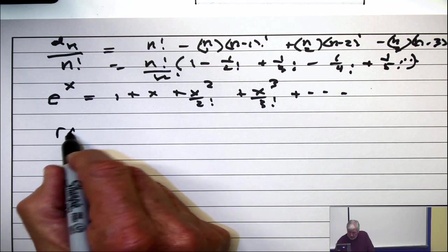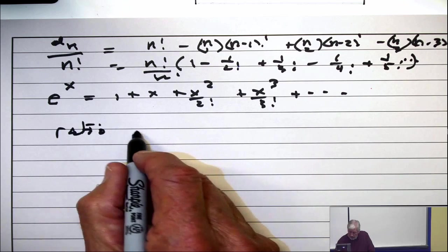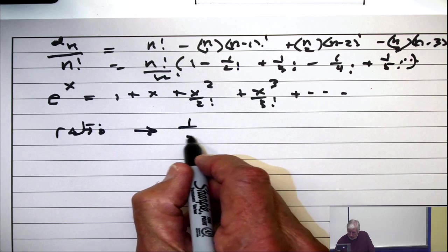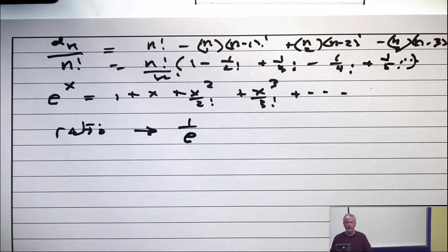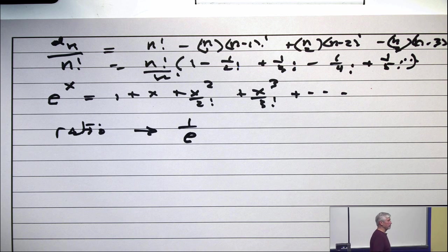So the ratio in the limit goes to 1 over E. And that's the calculus E. I mean, 2.7, etc. So it's close to a third.